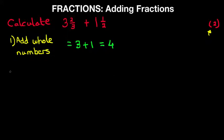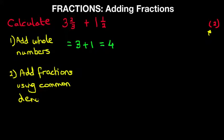Now the second part is to add the fractions using a common denominator. So let's do that. Well, the fractions we have are two-thirds plus a half. So what is a common denominator for these? Well, we know that three and two we can use the common denominator of six.